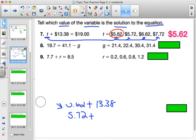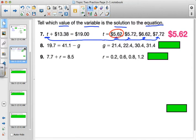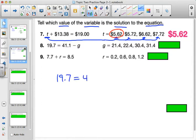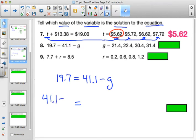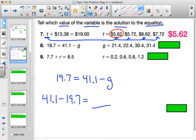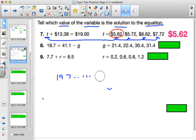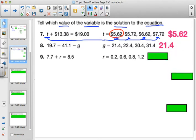Moving on to problem number 8. You have 19.7 equals 41.1 minus G. You can always switch things around if you want and say 41.1 minus 19.7 equals some unknown amount. And you can figure it out that way if you wanted to. However, it is up to you. The correct answer when you look at this is going to be 21.4.